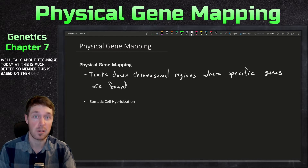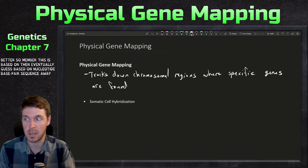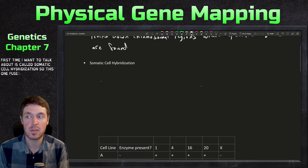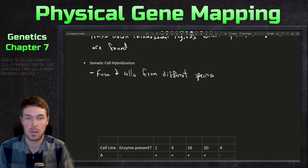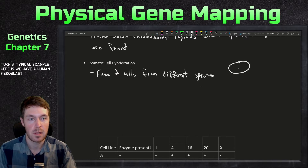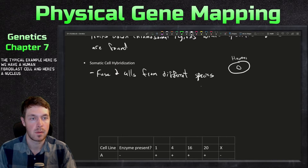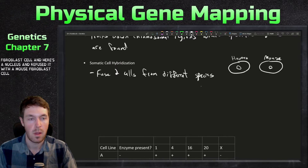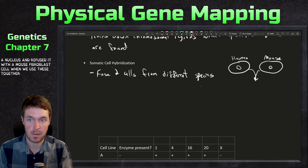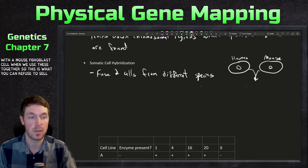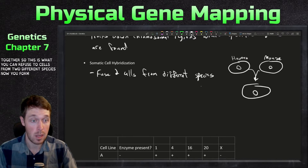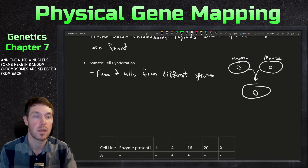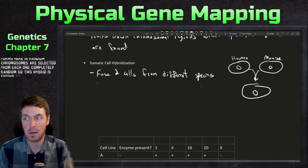The first technique is somatic cell hybridization, which fuses two cells from different species. The typical example is a human fibroblast cell fused with a mouse fibroblast cell. When you fuse these together you form a new hybrid cell with a new nucleus, and random chromosomes are selected from each species completely at random. This hybrid is known as a heterokaryon.